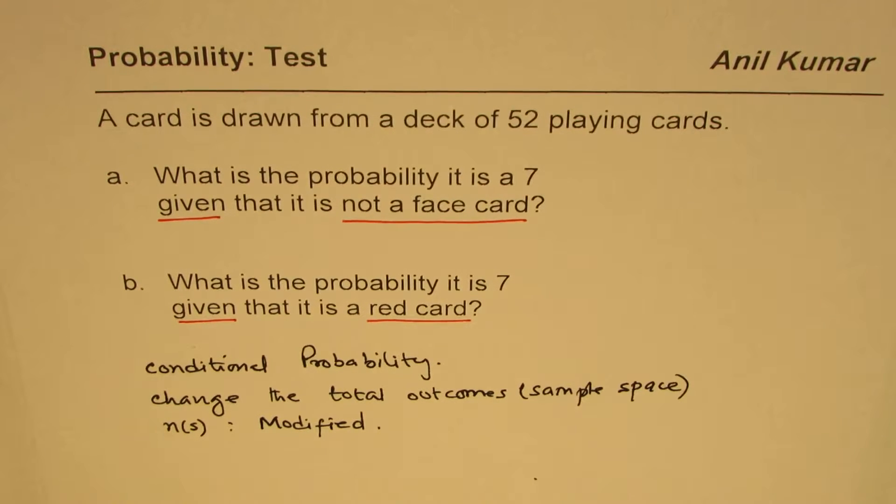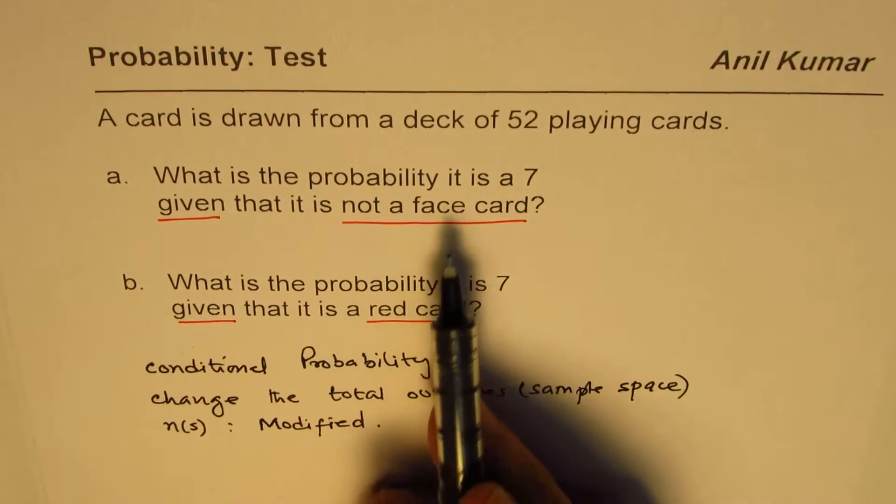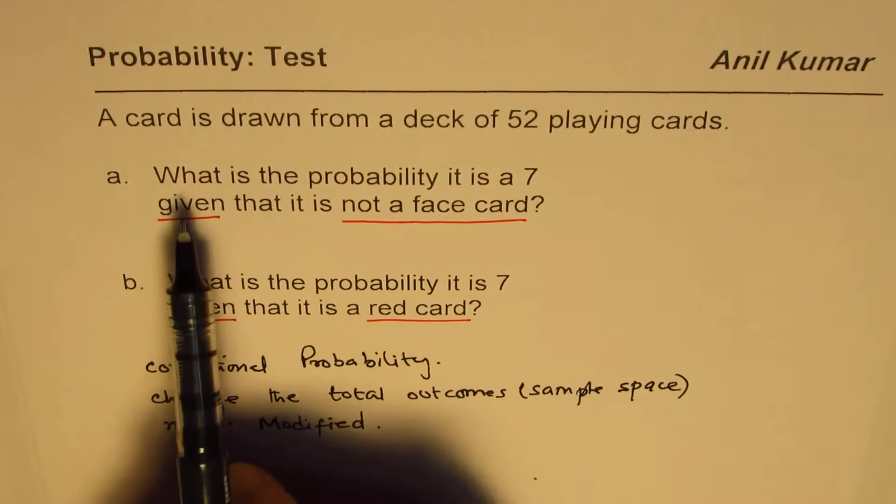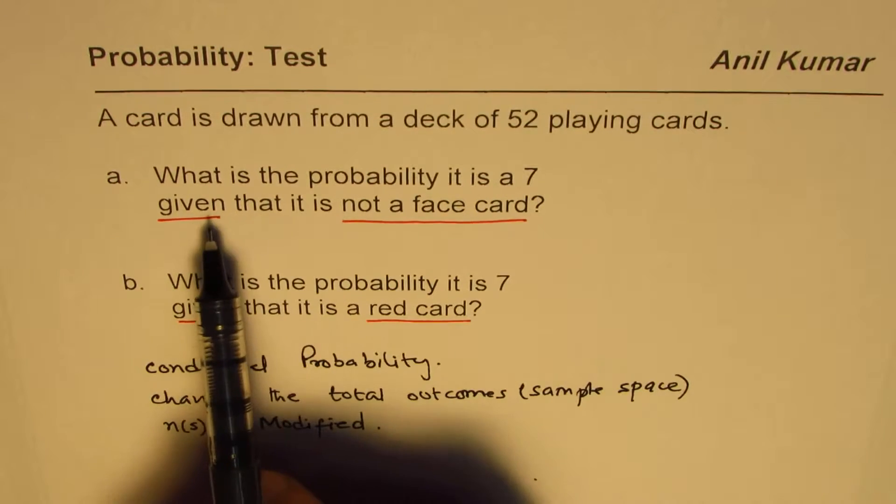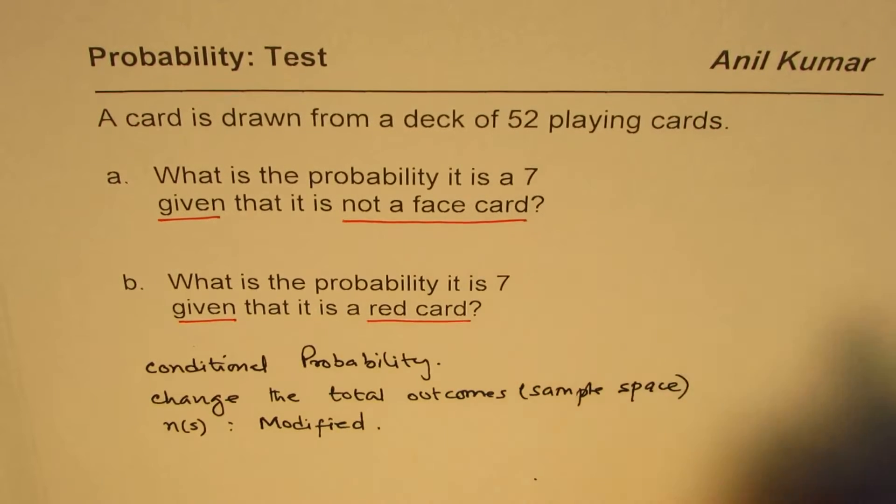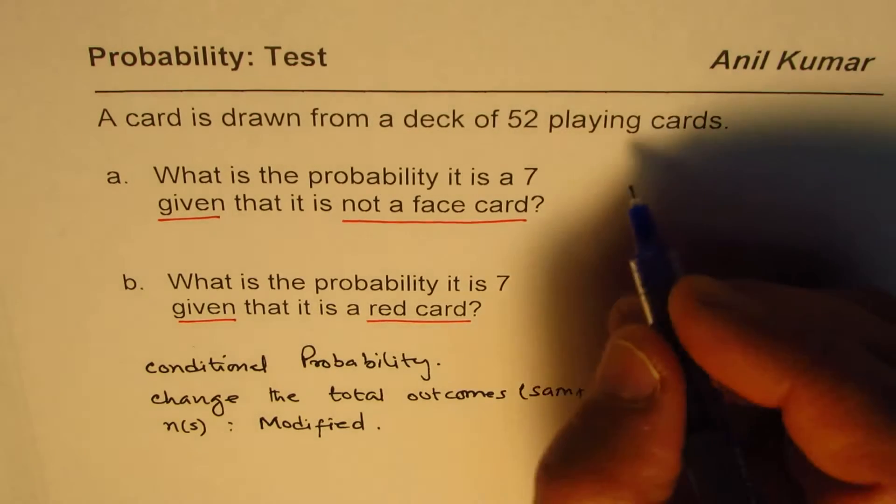To answer these questions correctly you have to look into the modified sample space and then answer the question. That will help you to get the correct answer. Let's apply this knowledge and answer these questions. The first one is: what is the probability it is a seven given that it is not a face card?